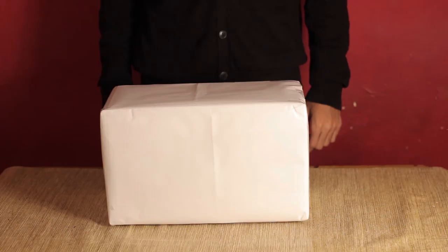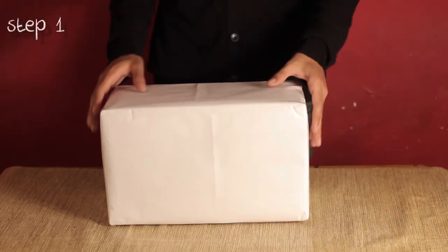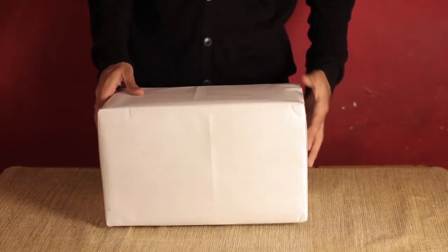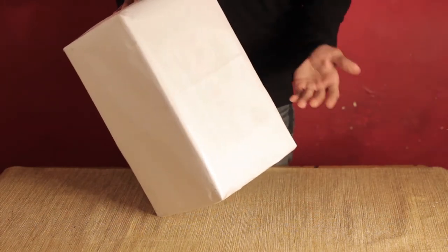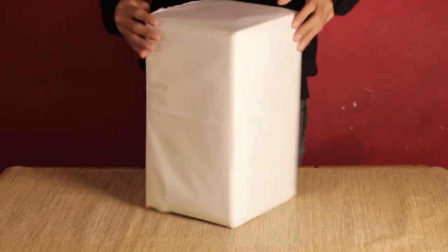First thing you need to do is take a box—a computer box or any other appliance box—and make sure that the width of the box is about 10 inches. Now what you do is you cut one side of the box.